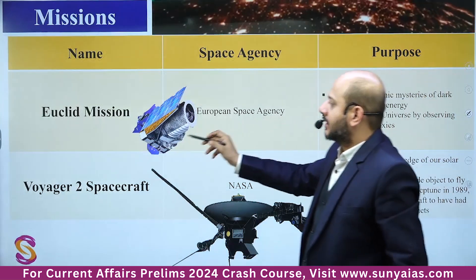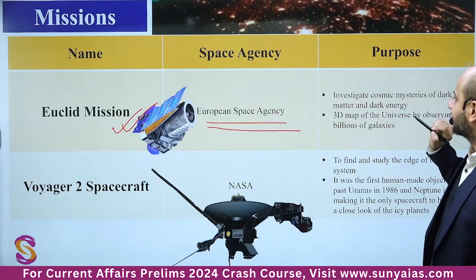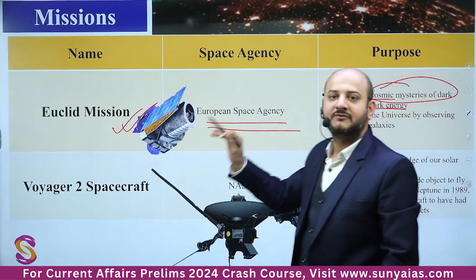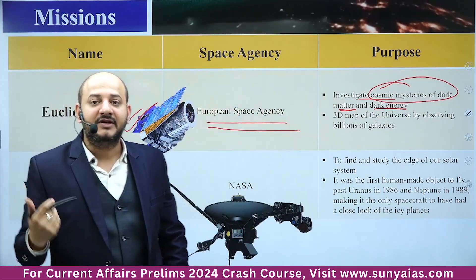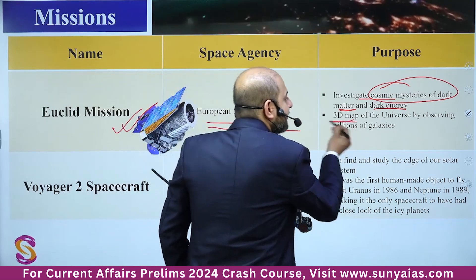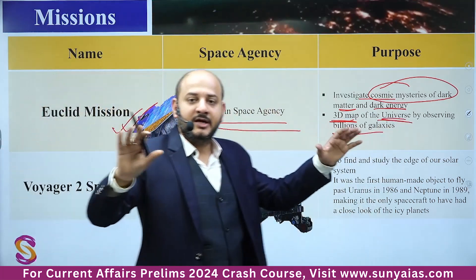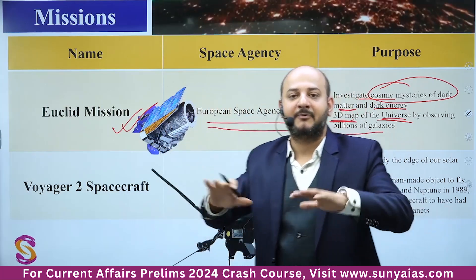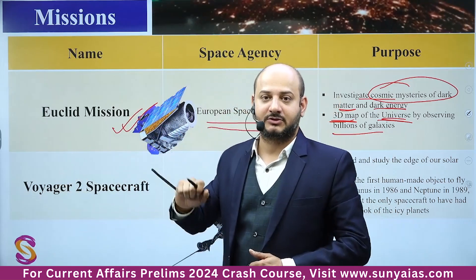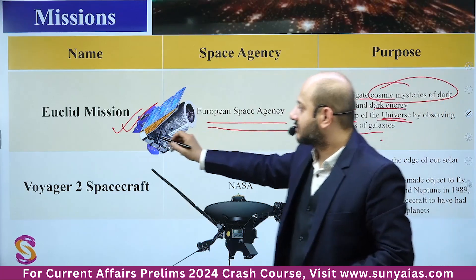The Euclid mission is by the European Space Agency. Its purpose is to investigate the cosmic mysteries of dark matter and dark energy. It will provide a 3D map of the universe by observing billions of galaxies. Just as we have political maps of India and maps of the ocean floor, the Euclid mission aims to create a map of the cosmic world.